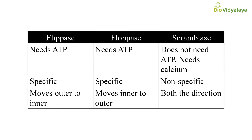Let's see the main differences. Flippases need ATP, floppases need ATP, but scramblase does not need ATP — it needs calcium. Flippases are specific: they move specific lipids from one monolayer to another. Floppases are also specific. Scramblase is non-specific. Flippases move lipids from the outer monolayer to the inner monolayer. Floppases move lipids from the inner monolayer to the outer monolayer. Scramblase moves lipids in both directions.